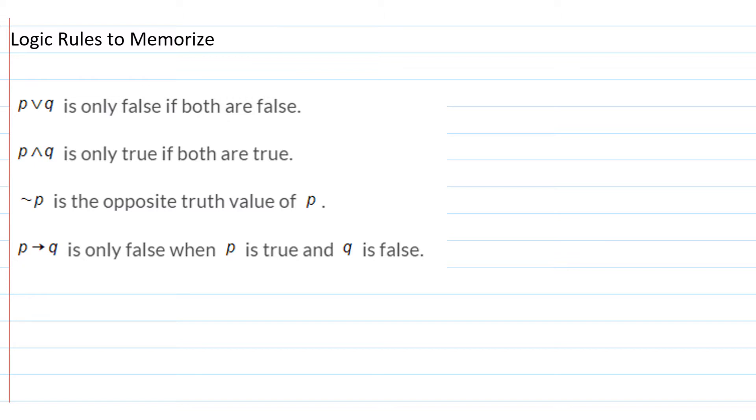But before we do, these are the basic rules that we're going to be using. First of all, P or Q, and this symbol here, that means or. P or Q is only false if both parts are false. The P has to be false and the Q false. Otherwise, this is going to be a true statement.